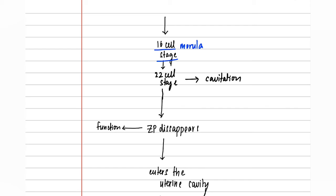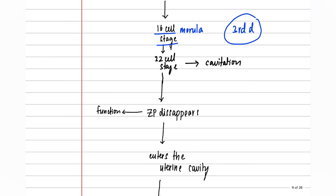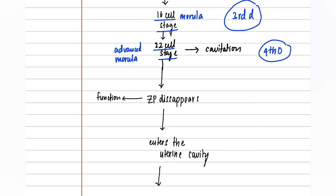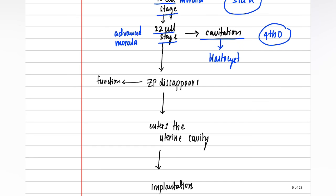After the eight-cell stage, there is the 16-cell stage, known as the morula, which usually occurs around the third day after fertilization. This divides again to form the 32-cell stage, known as the advanced morula, which occurs on the fourth day after fertilization. The advanced morula undergoes cavitation, with fluid filling inside it, forming the blastocyst. The zona pellucida is present until the blastocyst stage.